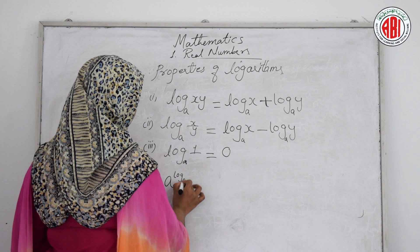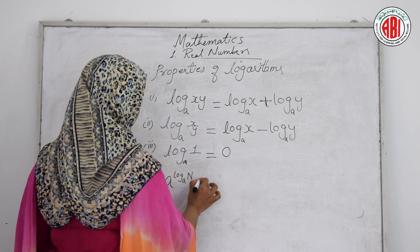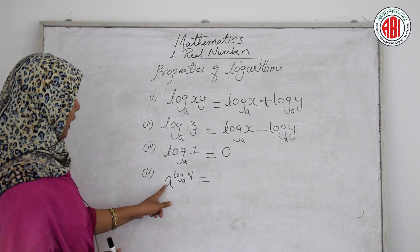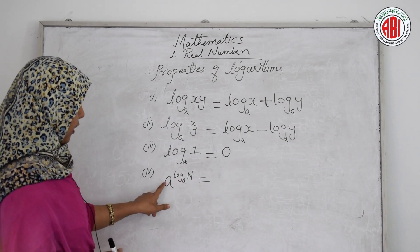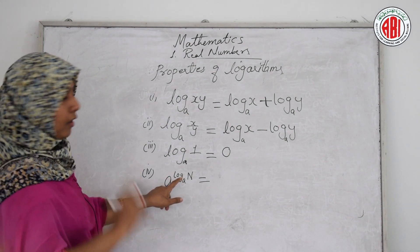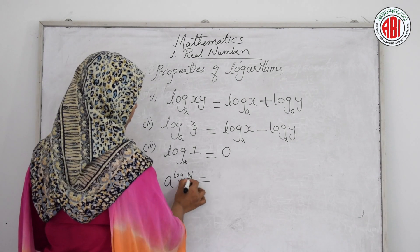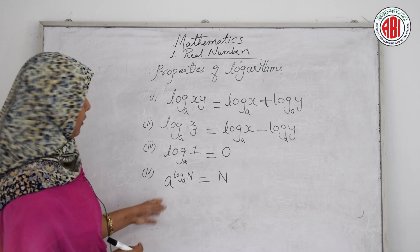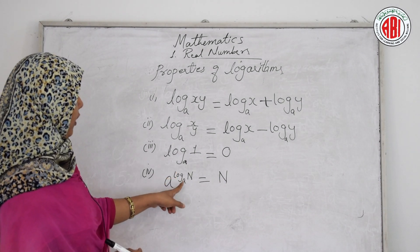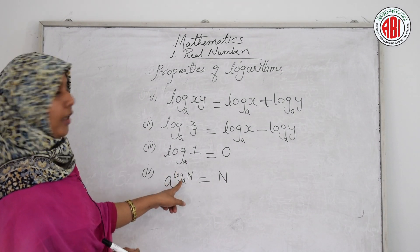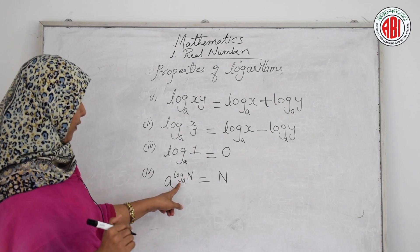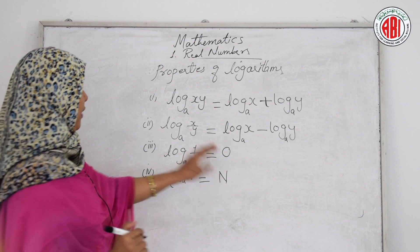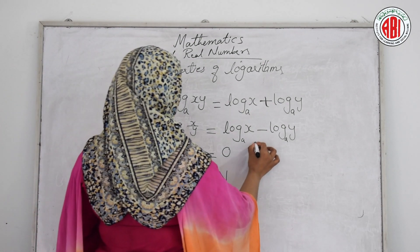The fourth property: a to the power log base a of n equals n. Here, a^(log_a n): the log base a of a is 1, so this becomes 1 times n, which equals n. So a^(log_a n) = n.